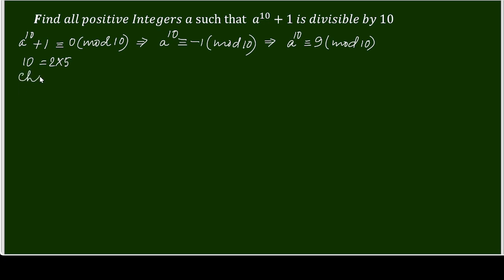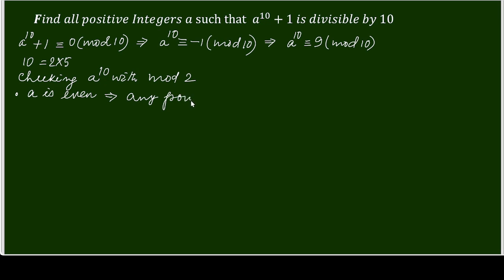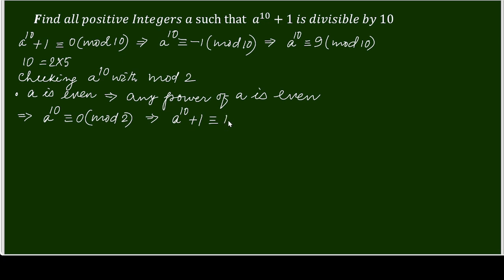Checking with modulo 2. First, let us check the condition where a is even. When a is even, any power of a is also even, so a to the power 10 is congruent to 0 modulo 2. That means a to the power 10 plus 1 is congruent to 1 modulo 2, meaning it is not divisible by 2. So a cannot be even.